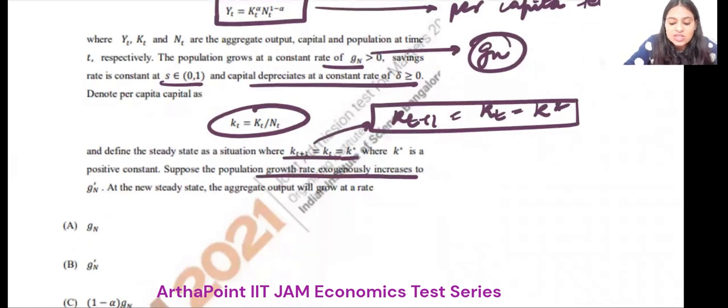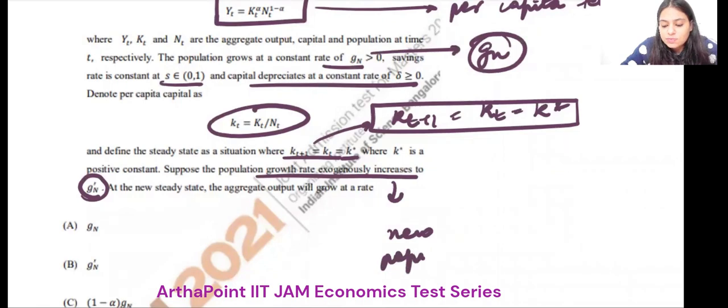K star is positive constant. Population growth has exogenously increased to Gn star. So basically, it simply says that the new population growth is Gn dash.